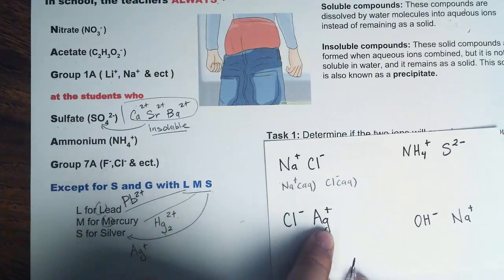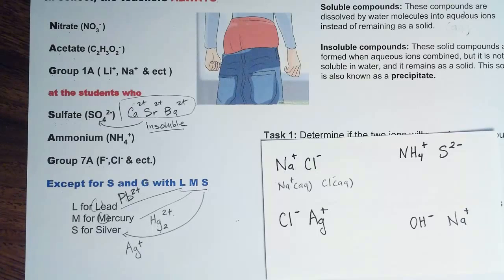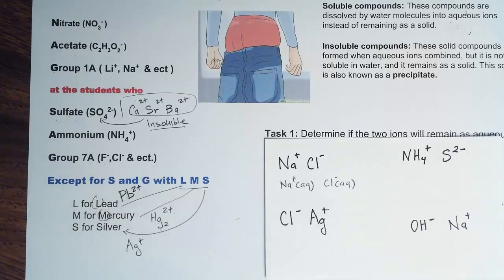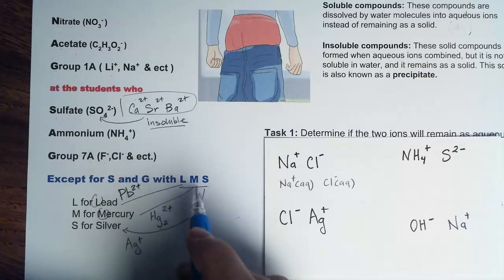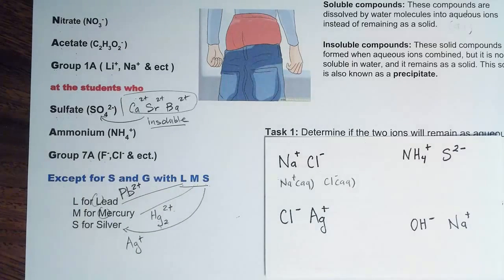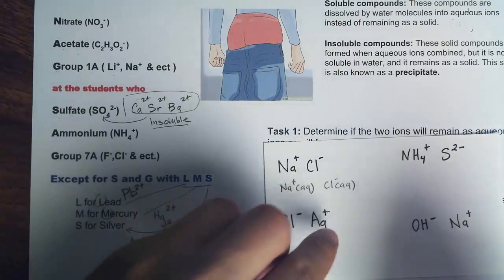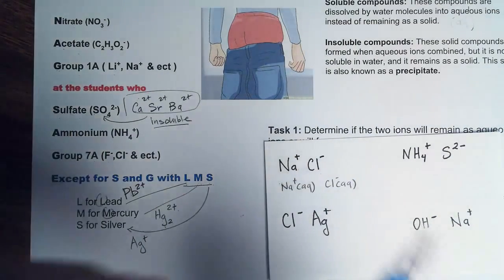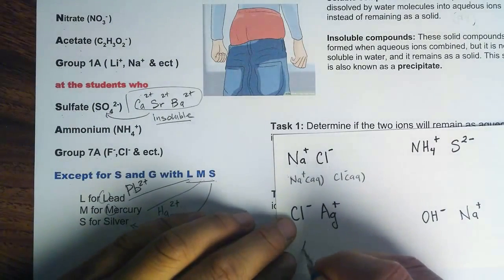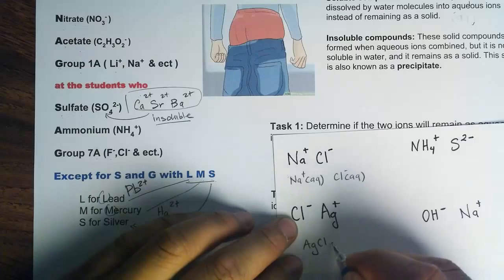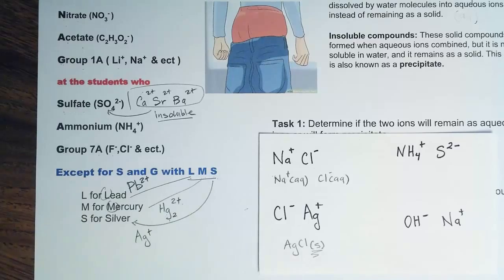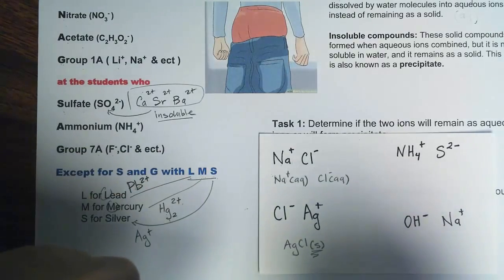The next example: chloride and silver ions. Chloride comes from Group 7A, which is always soluble with the exception of LMS — lead, mercury, silver. Silver is in LMS, so it will become insoluble. When you mix a solution with chloride and silver ions, they combine to form AgCl as a solid precipitate instead of remaining as aqueous ions.